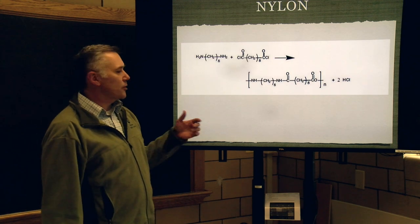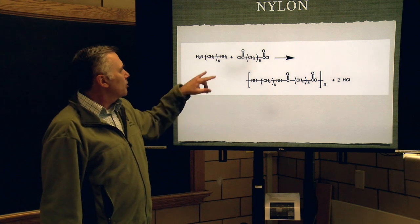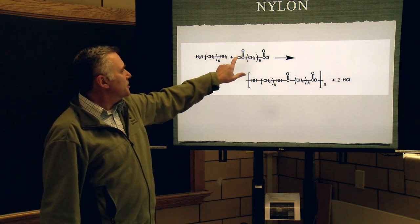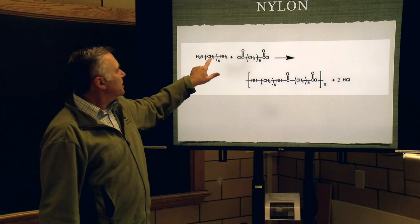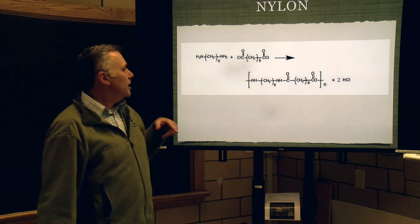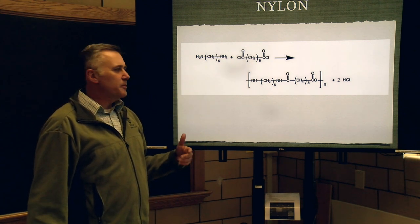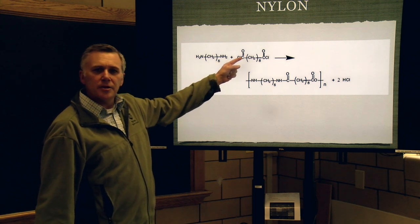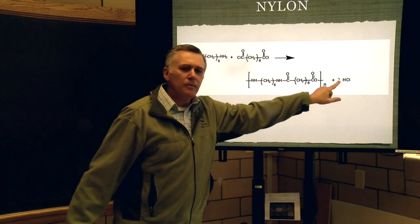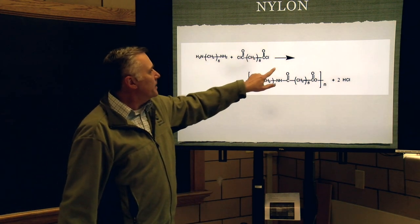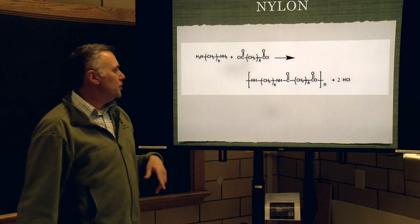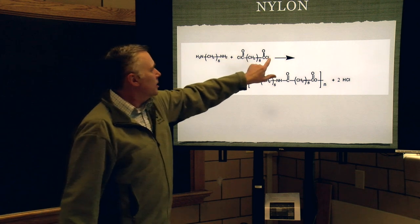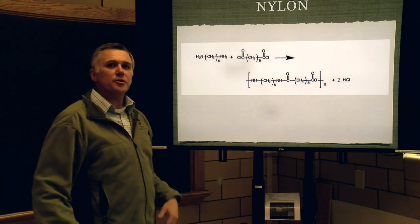The second part — we're actually going to make nylon. We're starting with two reactants. In one, we have an NH₂ group; in the other, we have a carbon double-bonded to oxygen and a Cl group. The six and eight indicate there are six CH₂s and eight CH₂s respectively. These react: the NH₂ group becomes connected to the Cl group, losing a hydrogen and a chlorine to make HCl, forming an amide nitrogen-carbon double-bonded oxygen linkage between the two. Since both reactants are bifunctional, it reacts on both ends, making a really long chain — hence polymer.